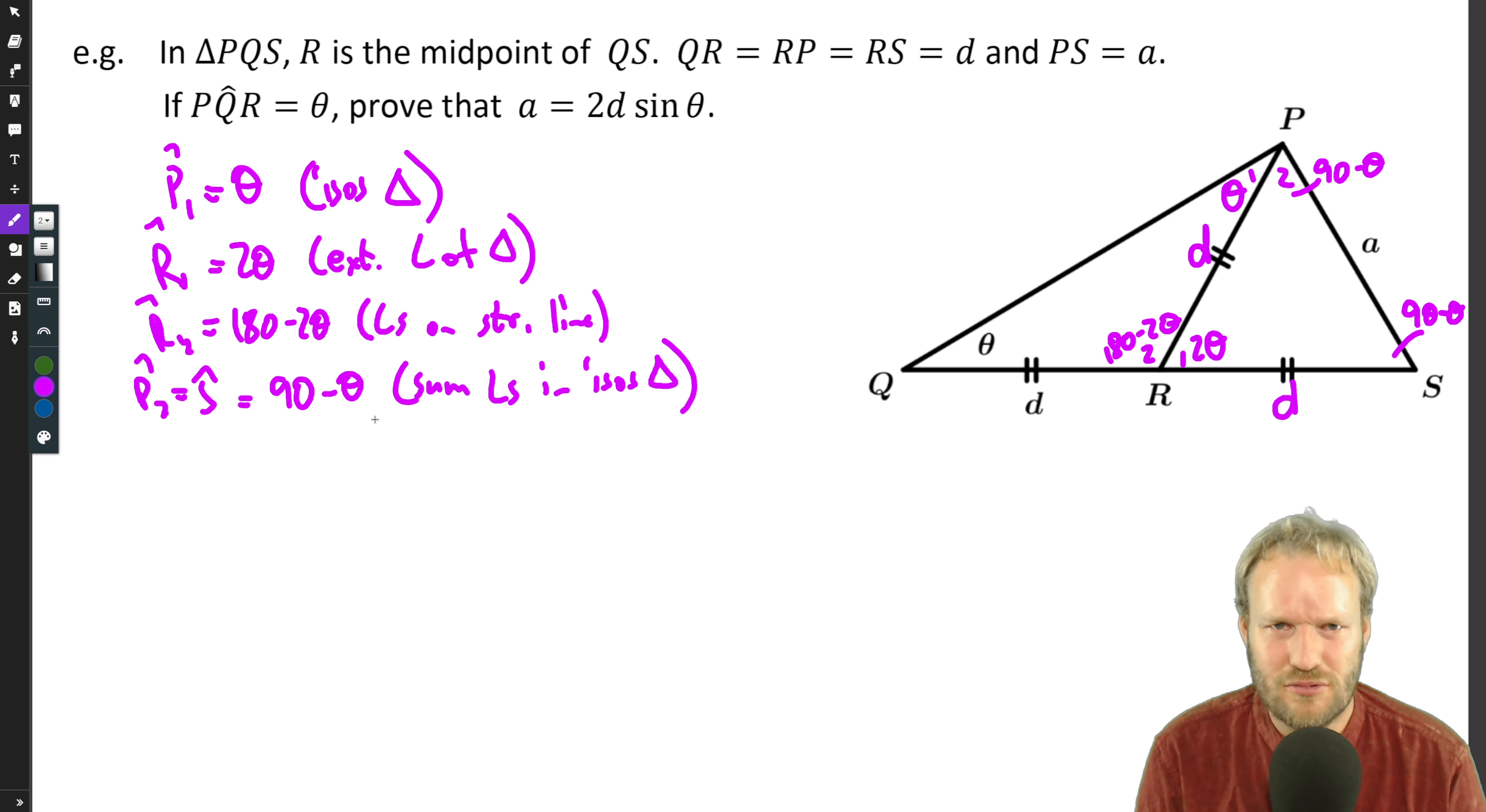Okay, so not too bad. Rather err on the side of writing down statements and reasons because we did need those geometric reasons. Now we've got more than enough information to say, okay cool, well what are we trying to find here? We're trying to prove that a is 2d sine theta.